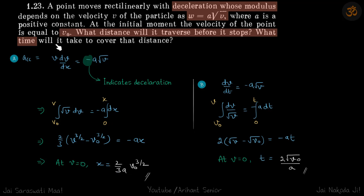Part B: how much time it will take to cover that distance. This time the same equation minus a√v we will write in the form of dv/dt because this time we want the relation between v and time. So again we will integrate both sides and we will get a relation between v and t, and this time when v is 0, we will find at what time this happens.